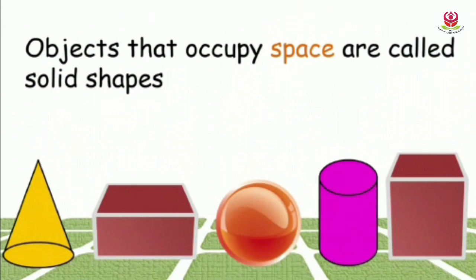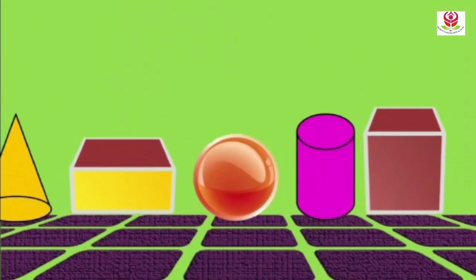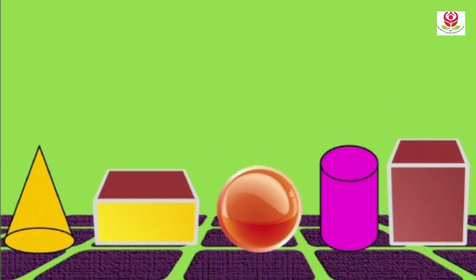There are some objects that occupy space. Such objects are called solid shapes. So these 3D shapes are also known as solid shapes. The pictures shown are objects which occupy space in them, so they are called solid shapes. Now let us see the three dimensions of these solid shapes.